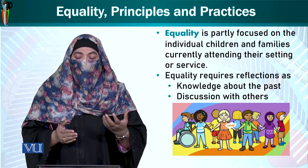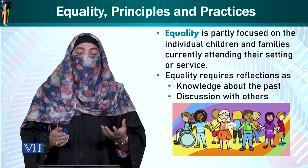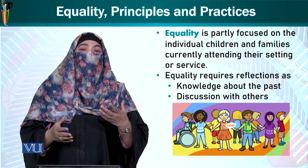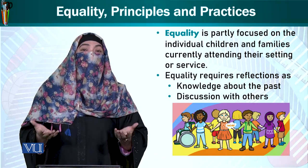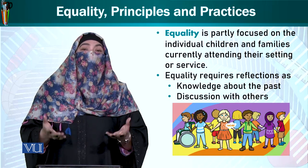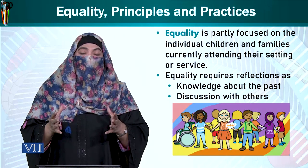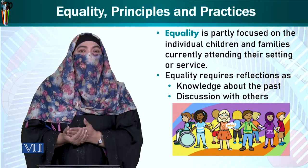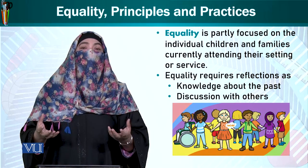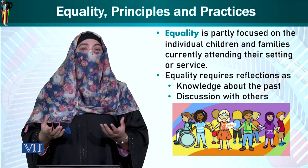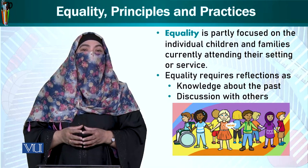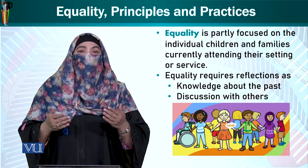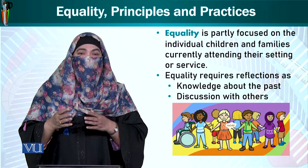So equality requires reflection as well as knowledge about the past and discussion with others. یہ equality تب تک آپ sustain نہیں کر سکتے یا implement نہیں کر سکتے جب تک آپ کو سارے بچوں کی background کا پتہ نہ ہو۔ تو ان backgrounds کو کچھ تو واقعات جب بچے اسکول میں داخل ہوتے ہیں تو ان کے record میں آ جاتے ہیں، اور کچھ آپ کو parent-teacher meeting کے دوران find out کرنے پڑیں گے۔ (You cannot sustain or implement equality until you know every child's background. Some information comes through school records at admission; other details must be found during parent-teacher meetings.)